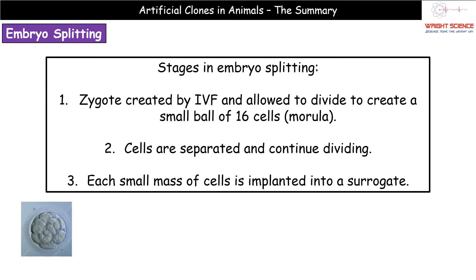We're going to have a look at the processes we can use to clone our animals artificially. The first one is a process called embryo splitting. We're going to start with a zygote — basically our fertilised egg cell. We will have created this zygote through the process of IVF, in vitro fertilisation — a lab-based process whereby we've got the egg and then we introduce the sperm into basically a petri dish together.